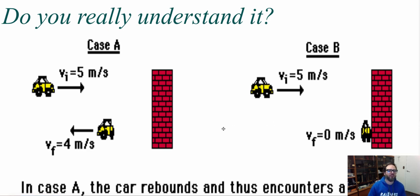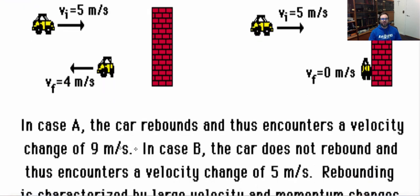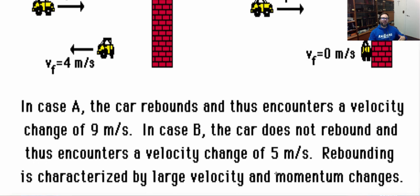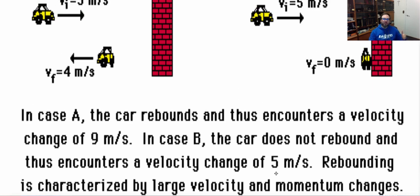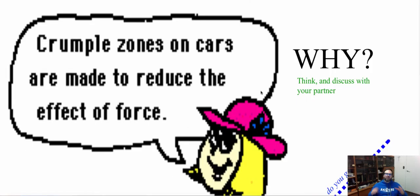In Case A, the car rebounds and encounters a velocity change of 9 meters per second. In Case B, the car does not rebound and the velocity change is only 5 meters per second. Rebounding is characterized by a larger velocity change, and that causes more force on the body. Now, using impulse, momentum, and Newton's laws, pause and think about why crumple zones are made to reduce the effect of force in a car. We'll talk about this tomorrow in class.